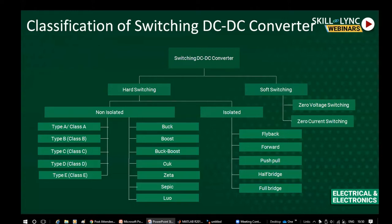You can operate the converter in first, second, third, or fourth quadrant depending on your requirement. These converters are mostly used in DC motor speed control, where we can get forward motoring mode, forward braking mode, reverse motoring mode, or reverse braking mode. All four modes of operation are possible with the Type E converter. The other set of classification includes buck converter, boost converter, buck-boost, Cuk, zeta, SEPIC, and Luo converter.